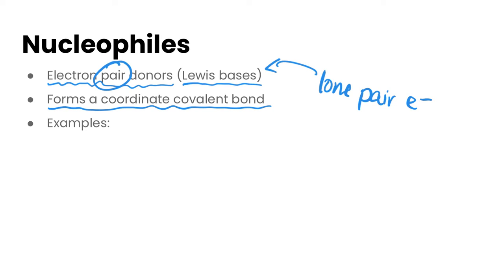So some examples might be something like water. Water has two lone pairs of electrons on the oxygen. We could have OH minus, lots of lone pairs of electrons on the oxygen. Ammonia is another example. There's a lone pair on the nitrogen, as well as the nitrile ion. There is a lone pair of electrons available here as well. So these are all really great nucleophiles that we can use in these different reactions.